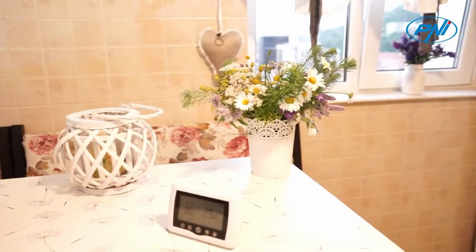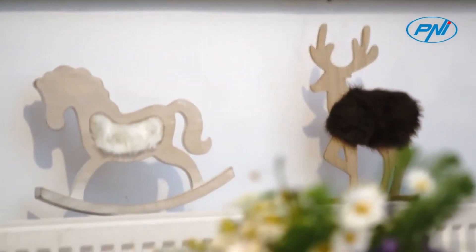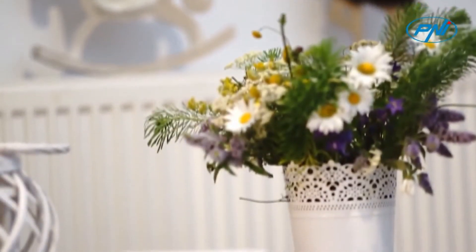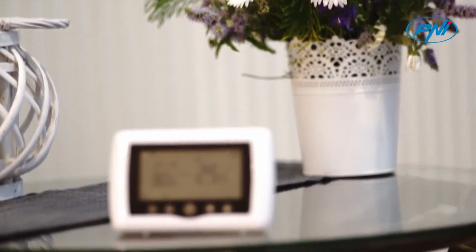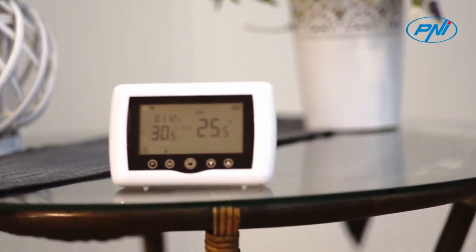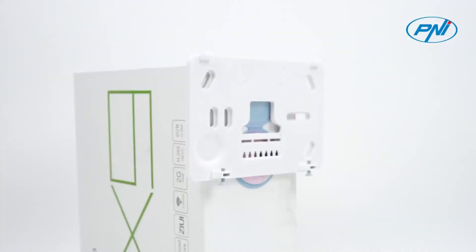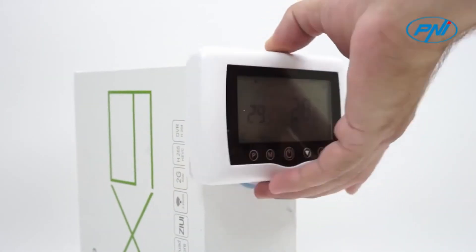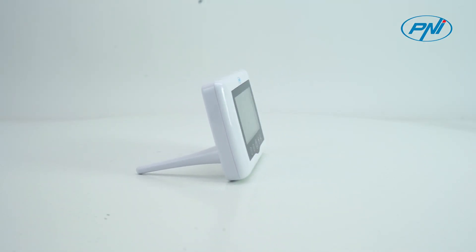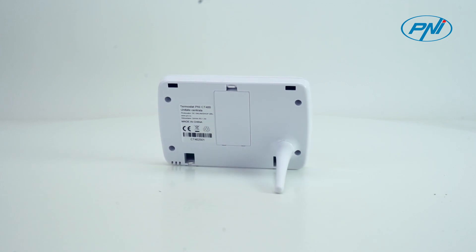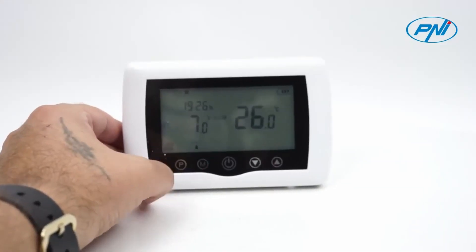When the open window OWD detection mode is activated from the advanced settings, the system will automatically turn off the heating if there is a sudden drop in temperature, 2 degrees Celsius in 50 minutes by default, 2 degrees Celsius in 15 minutes by default, and the dedicated symbol will appear on the screen. The device will return to the previous operating mode after 30 minutes.